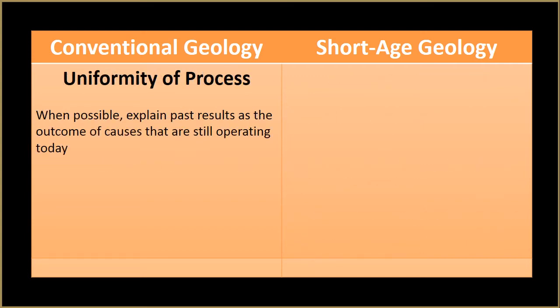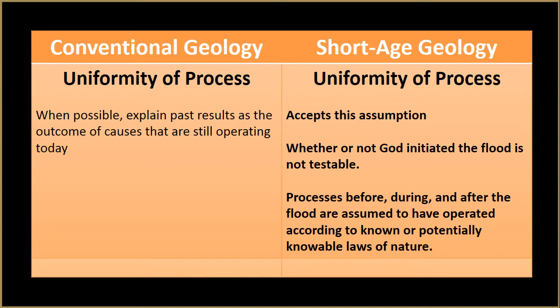The second principle of conventional geology, the uniformity of process, says that when possible, past results should be explained as the outcome of causes that are still operating today. Short-age geology accepts this assumption. Whether or not God initiated the global flood is not testable, but processes before, during, and after the flood are assumed to have operated according to known laws of nature.